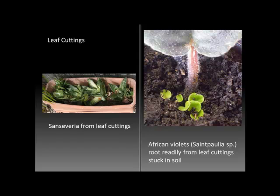A variety of plants, especially houseplants, can be successfully produced from leaf cuttings. There are illustrations here for plants we're going to be working with in the greenhouse over the next few labs. One is Sansevieria, also called mother-in-law's tongue, and the other is African violets — you can see the new shoots springing from this leaf cutting.